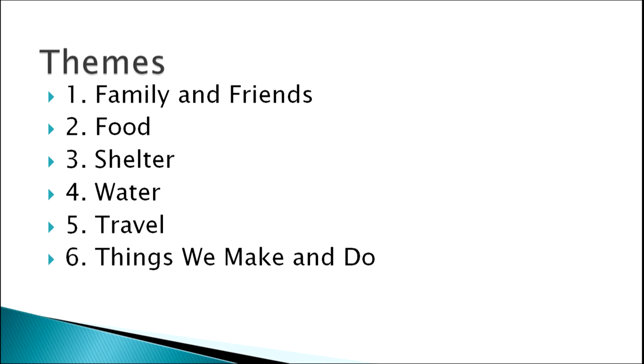These are the themes given in the EVS syllabus for primary classes. Theme one is family and friends. Theme two is food. Theme three is shelter. Theme four is water. Theme five is travel. Theme six is things we make and do. These are not topics — these are themes. Under these themes, there are lists of questions covering what students will learn. All these themes are close to our life: family and friends, food, shelter, water, travel, and things we make and do — these things make our life.